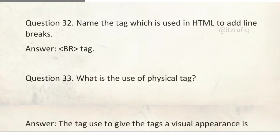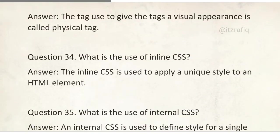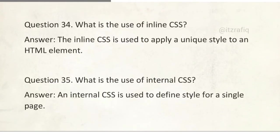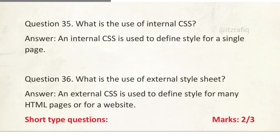What is the use of physical tag? The tag used to give visual appearance is called physical tag. For example, B, U, etc. What is the use of inline CSS? The inline CSS is used to apply unique style to an HTML element. What is the use of internal CSS? It is used to define style for a single page. And what is the use of external? It is used to define style for many HTML pages.